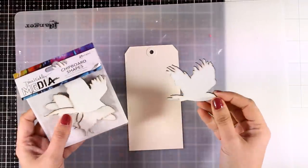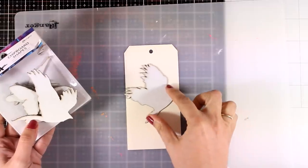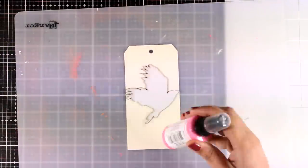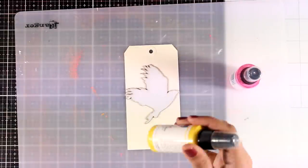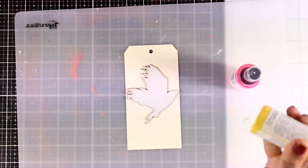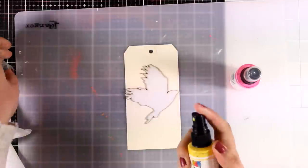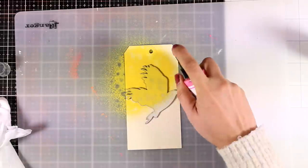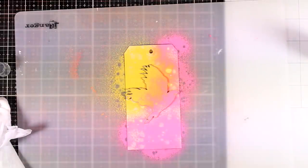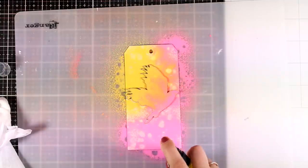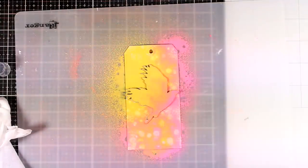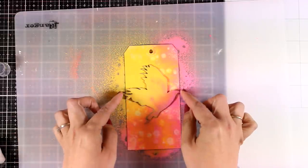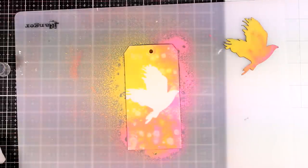Now, I'm going to show you a technique that I saw Dina Weekly doing while I was in Creativation last January. I'm using one of those chipboard shapes. These are from her chipboard shapes, which are called Flying. I'm placing the bird on top of a tag. I'm going to spray over with, again, the two colors that I used for the previous tag. So, that's Lemon and Magenta.